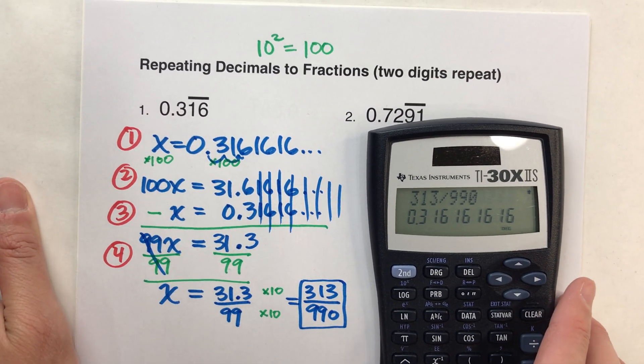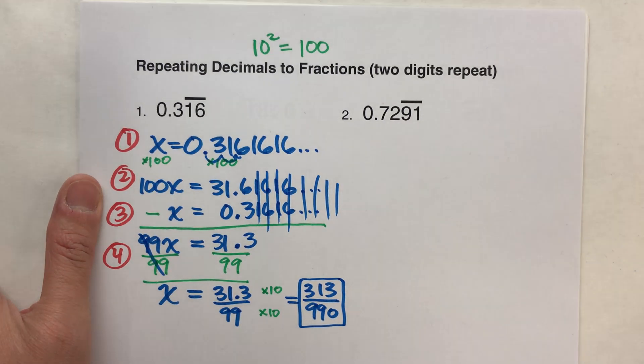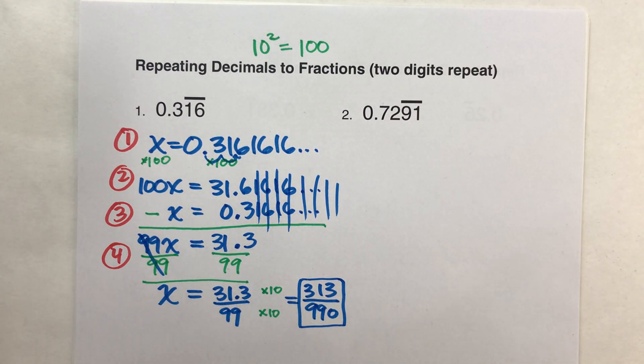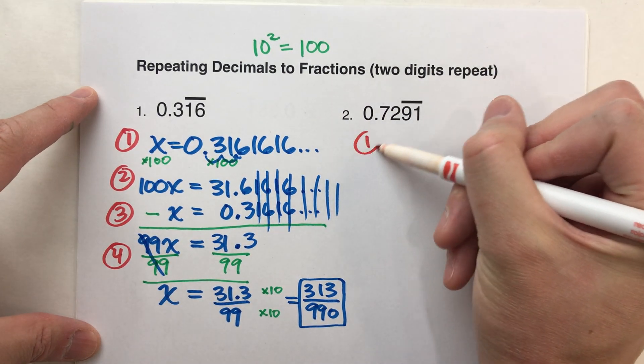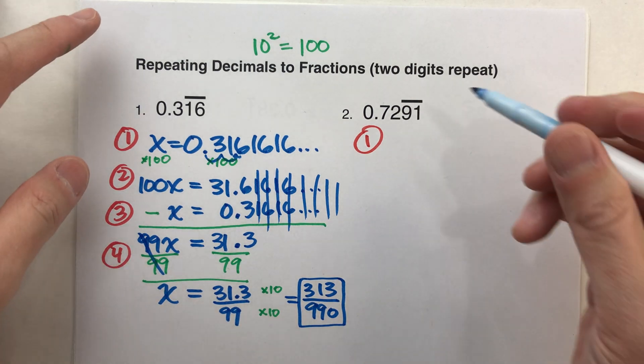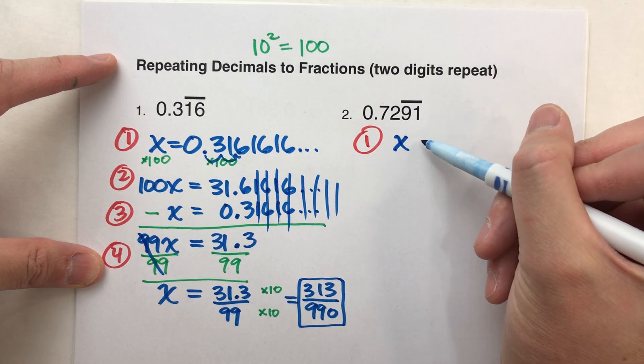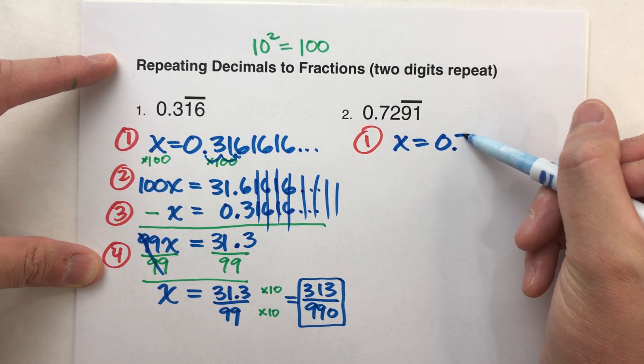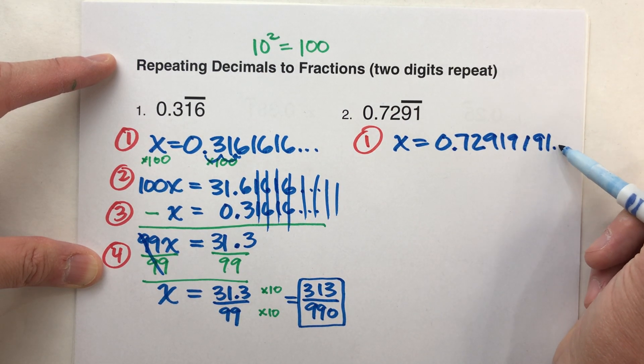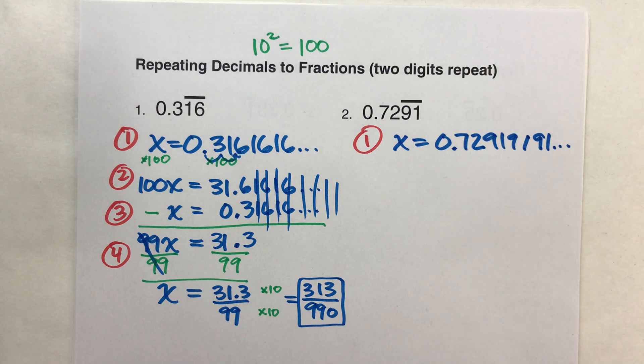Let's do another example so you can see it again. This one's a little bit harder though. 0.7291 where the 9-1 is repeating. Same steps. It just gets a little more complicated. Step one. Write an equation. Set x equal to the number. x equals 0.7291. 9-1. 9-1. 9-1.